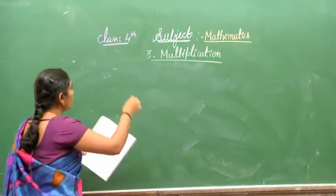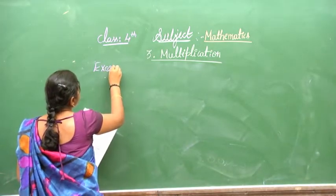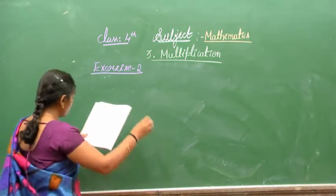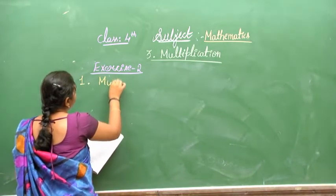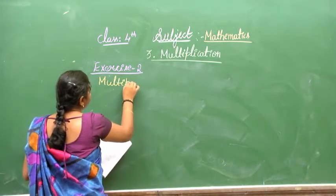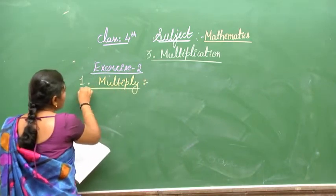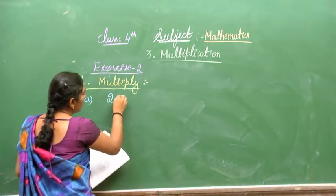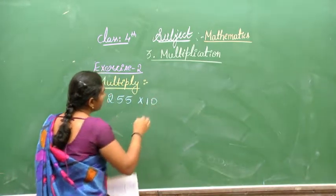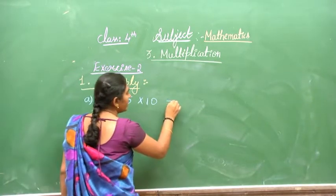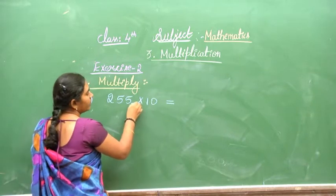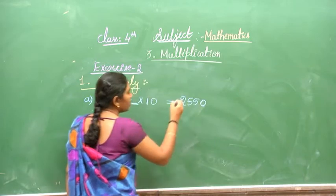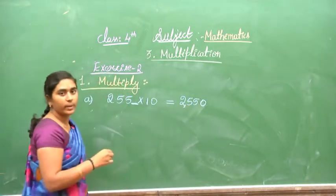Now let's work on Exercise 2 — multiplication. First question: 255 multiplied by 10. As I told you, the answer is very simple — just write one zero at the end. So 255 multiplied by 10 equals 2,550.